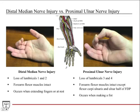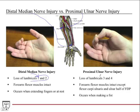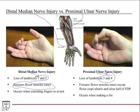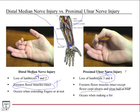Comparing these two injuries: in the distal median nerve injury, you have loss of lumbricals one and two. In the proximal ulnar nerve injury, you lose lumbricals three and four — that's the big difference. Forearm flexor muscles are intact in the distal median nerve injury because the injury is distal, and all those muscles have already received their innervation. In the proximal ulnar nerve injury, most forearm flexors are intact because median nerve is intact, except for the flexor carpi ulnaris and the ulnar half of flexor digitorum profundus.